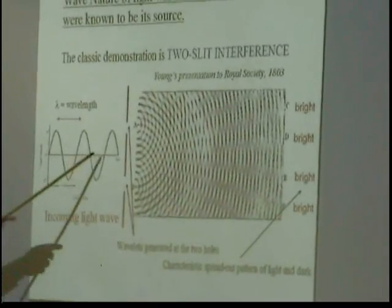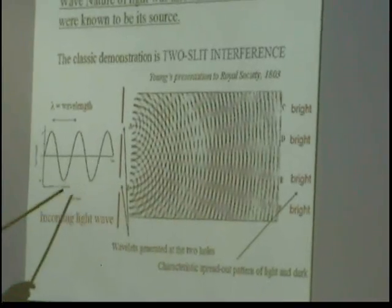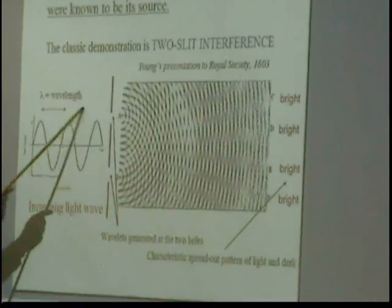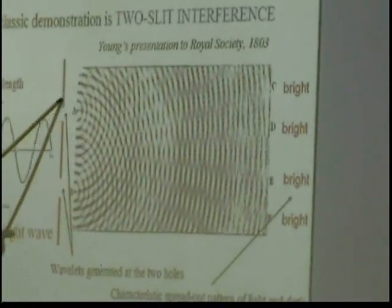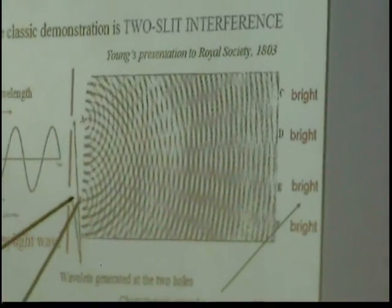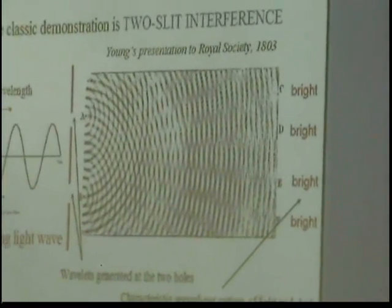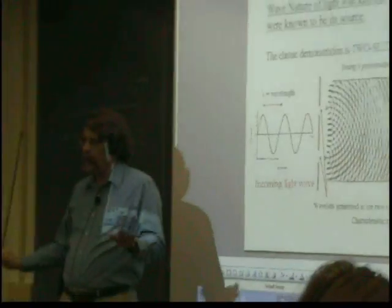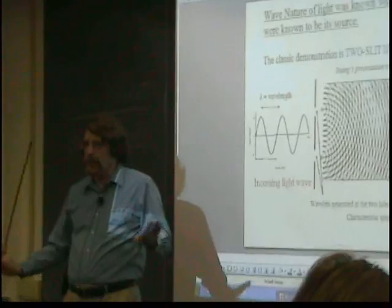And this wave, you put it through two very narrow slits, and what happens is, as it hits that, little waves get generated at each of these holes, and as they go out, two of these waves can be added to one another. So you can add waves on top of one another. It's a very important concept. We'll come back to it in a minute. It's called superposition.